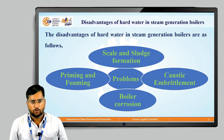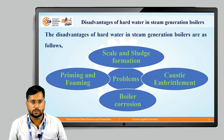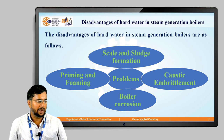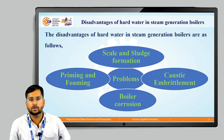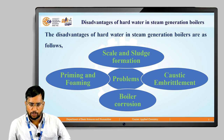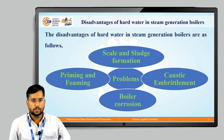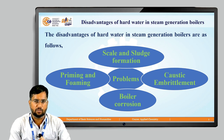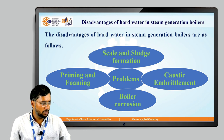In the previous lecture, we saw that when we use hard water, that is impure water, for steam generation in boilers, there are different disadvantages: number one is scale and sludge formation, second is caustic embrittlement, boiler corrosion, and priming and foaming. The first two — scale and sludge formation and caustic embrittlement — were covered in detail previously. In today's lecture, we will discuss the remaining two disadvantages: boiler corrosion and priming and foaming.